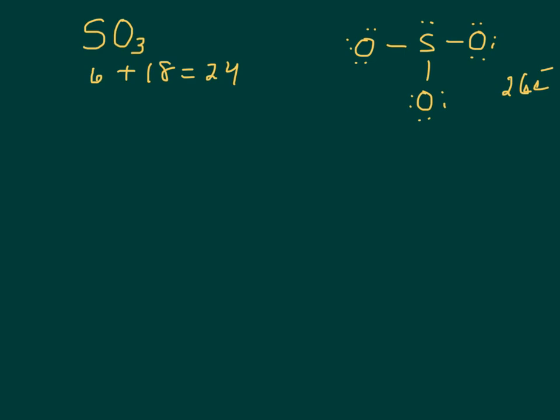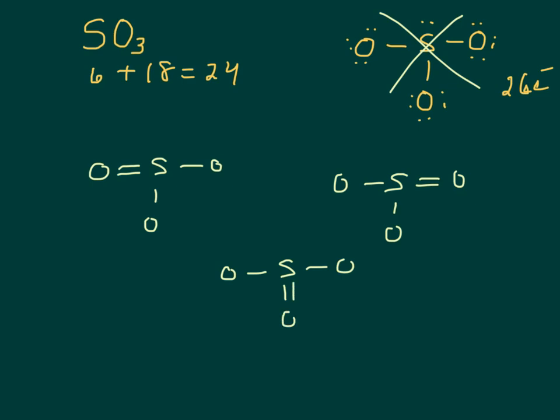And if I take the time to count those, I find out that I have 26 electrons. So remember, 2 extra means I need a double bond. Don't try to fix that structure, start over. I can put that double bond on the left. I can put that double bond on the right. Or I can put that double bond on the bottom. There's three different O's that could get those. And then I go through, and I give everybody 8 electrons.